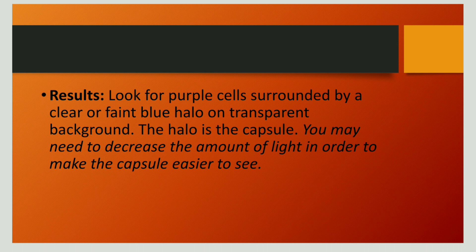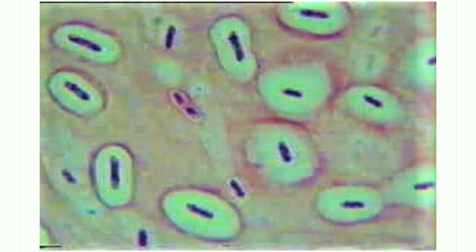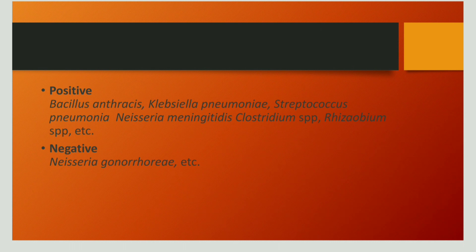Let us discuss the result of Antony's staining method. The bacterial cell is purple in color, whereas the capsule appears as a faint blue halo and the background is transparent. This is the microscopic view of Antony's capsule stain, showing the purple bacterial cell surrounded by a light blue capsule against a transparent background. With capsule staining, positive results are shown by Klebsiella pneumoniae and Cryptococcus neoformans, whereas negative results are shown by Neisseria gonorrhoeae.